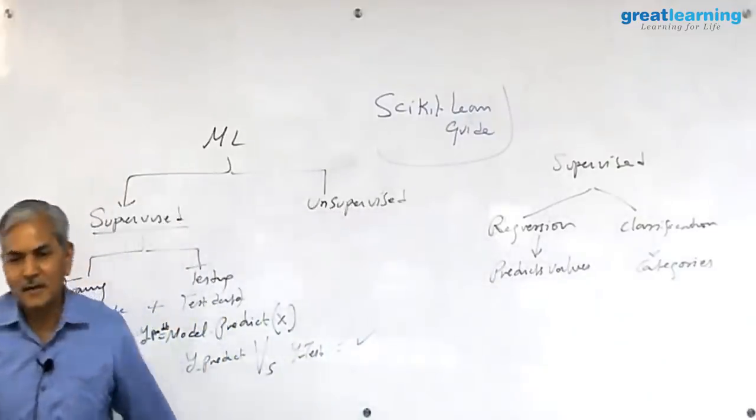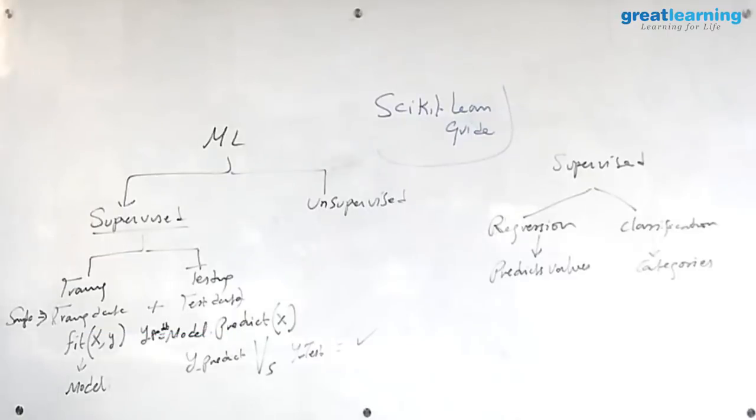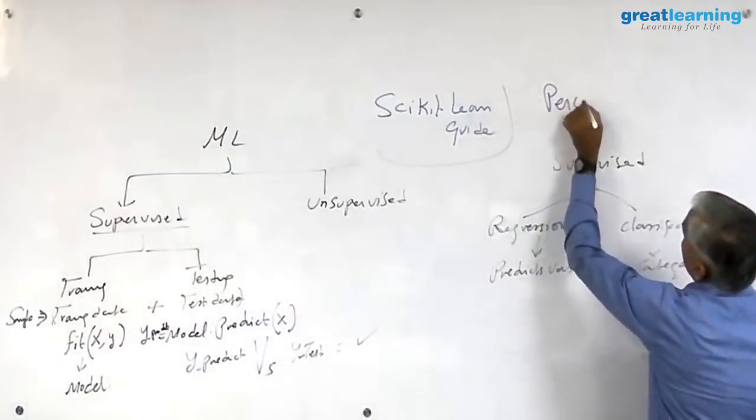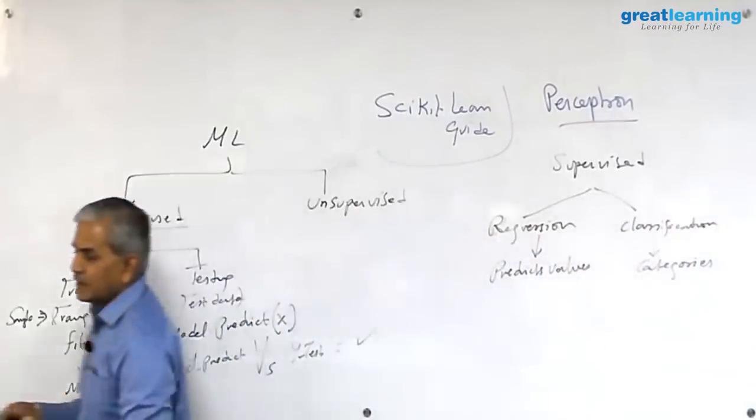So let's get into linear regression. Linear models can be used for classification also. For example, we have a model called perceptron. Please note it down. Perceptron. It is used for classification.